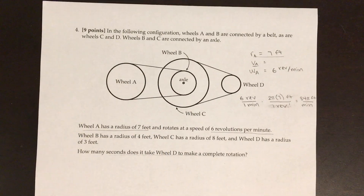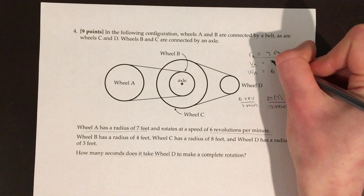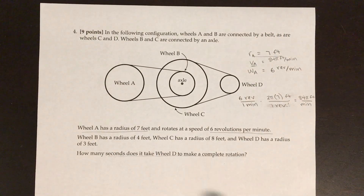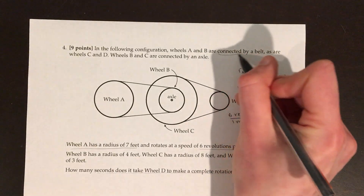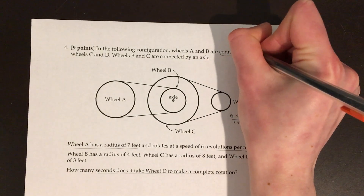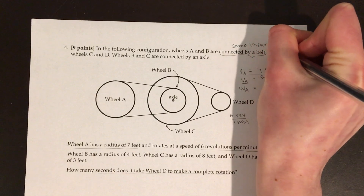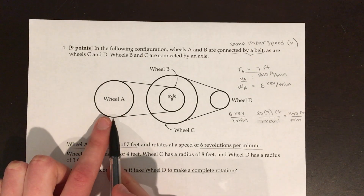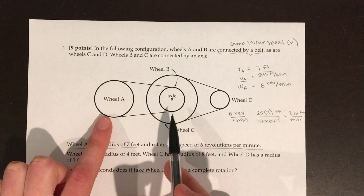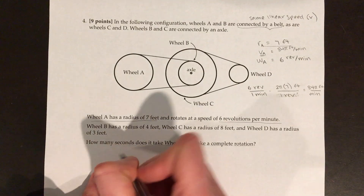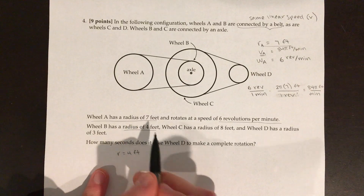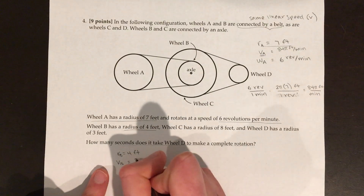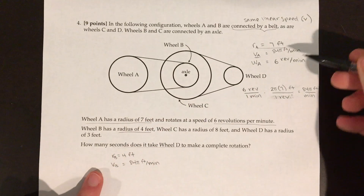The linear speed, or velocity, of wheel A is 84π feet per minute. Now, an important rule: if wheels are connected by a belt, they have the same linear speed. Because wheel A is connected to wheel B by a belt, they have the same linear speed. So the velocity of wheel B is also 84π feet per minute — the same as wheel A.